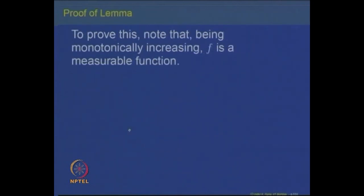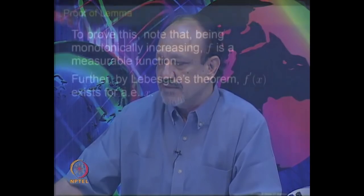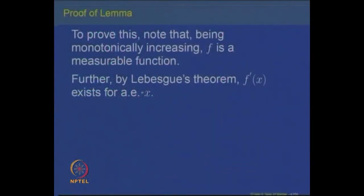The lemma says: for a monotonically increasing function f, by Lebesgue's theorem it is differentiable almost everywhere, its derivative is integrable, and the integral of the derivative satisfies ∫ₐᵇ f'(x) dλ ≤ f(b) − f(a). To prove this lemma, we first note that every monotonically increasing function is measurable — either because it is continuous almost everywhere, or because the inverse image of an interval under a monotone function is itself an interval.